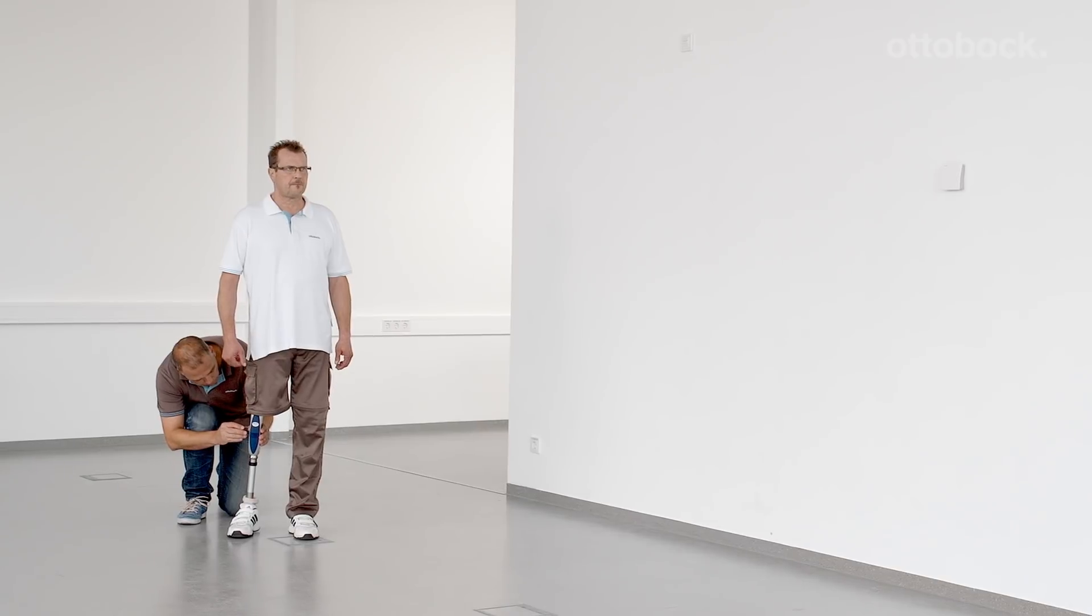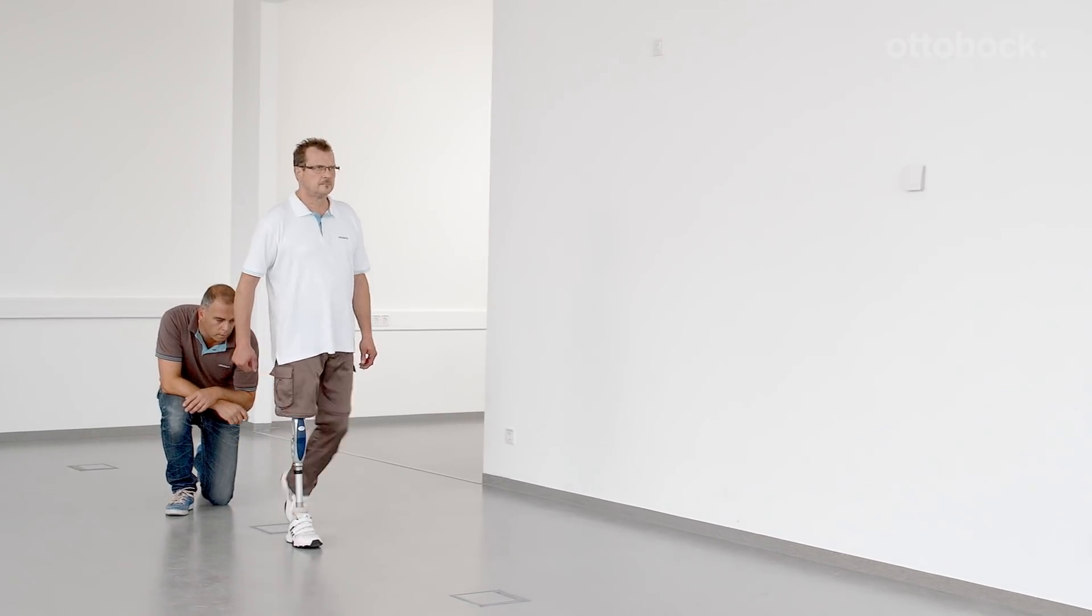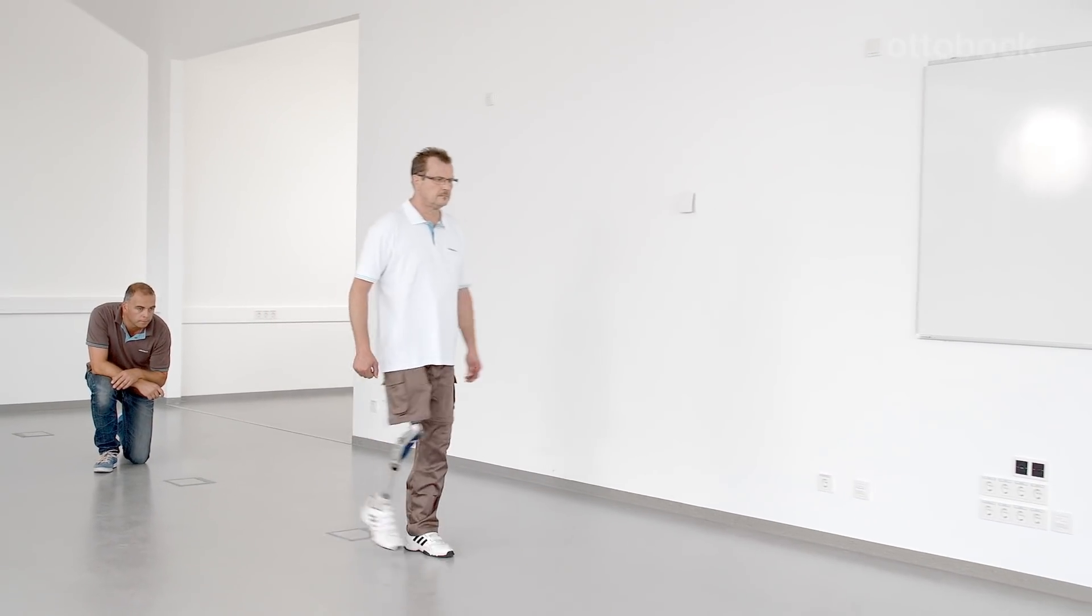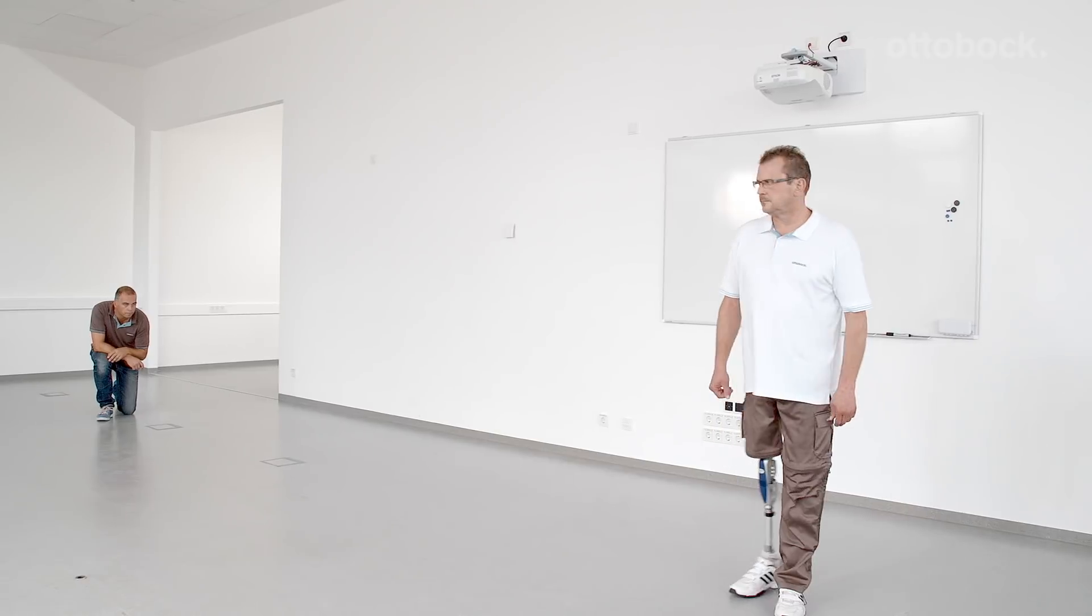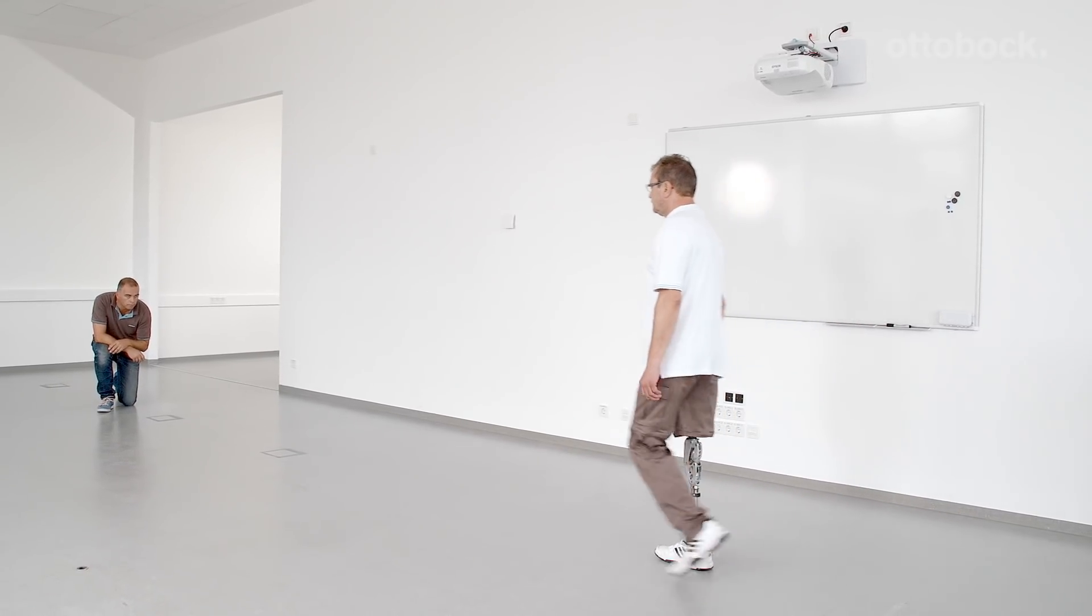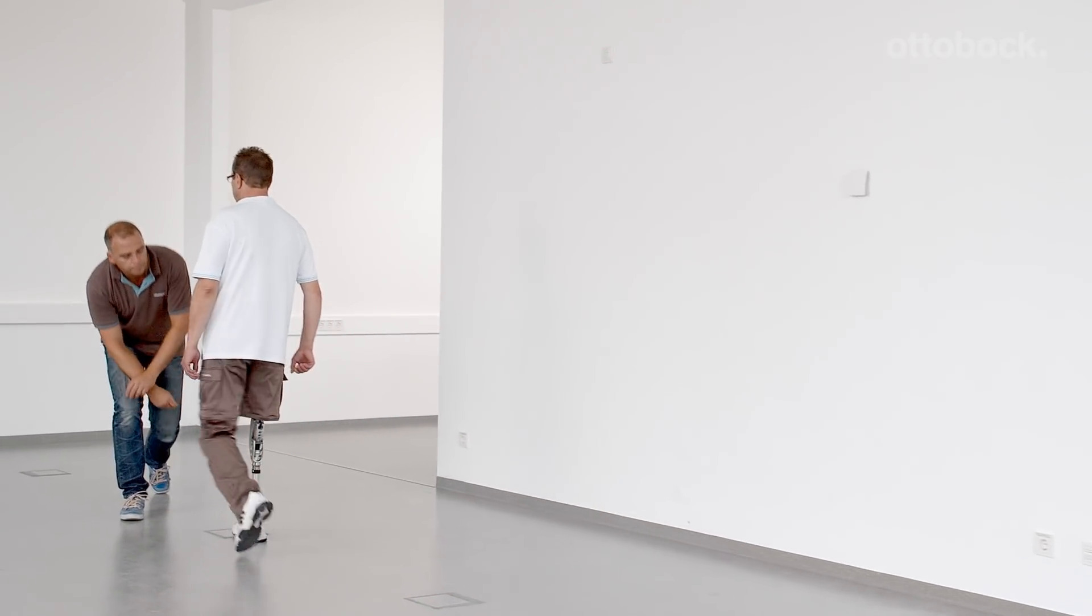The polycentric multi-axial joint design reduces the total length of the prosthesis during swing phase up to 25 mm depending on the flexion angle. Thus, the user obtains a higher ground clearance in the middle of the swing phase and the risk of tripping is reduced.